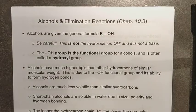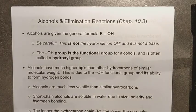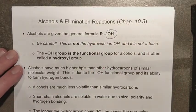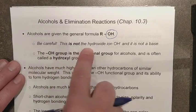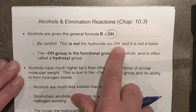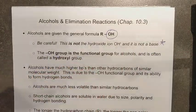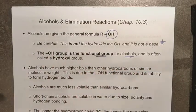Here we go - alcohols and elimination reactions, chapter 10.3, lesson one. We've already taken a look at one functional group, the alkyl halides, in which a halogen is present within the molecule. Alcohols have their own unique functional group: an OH group, where R is any hydrocarbon chain. When found in a hydrocarbon it behaves as an alcohol. Be careful - this is not ionic, it is not the hydroxide ion OH minus, and it is not basic.